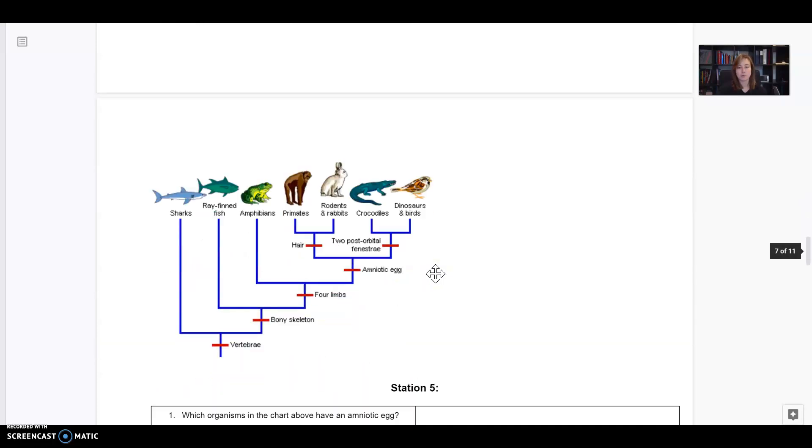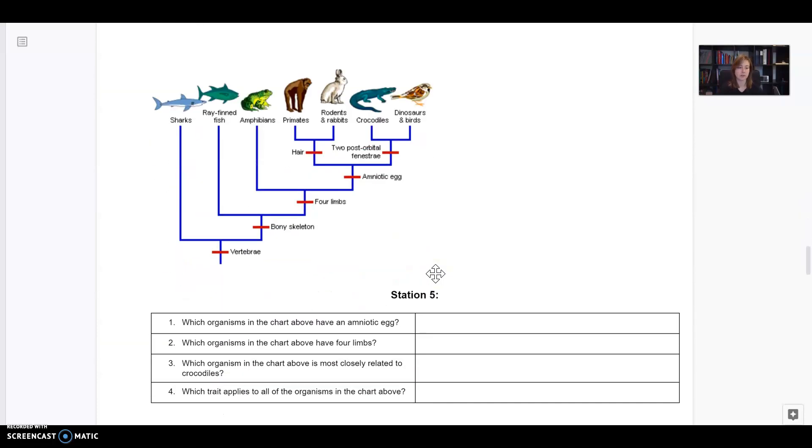Now station five is some more cladogram practice. Let's do one of those together. It says which organisms in the chart above have an amniotic egg? An amniotic egg has an extra membrane in it so it can be laid on land. But you don't need to know that to figure out this question. All we have to do is find amniotic egg on this cladogram. It's right there.